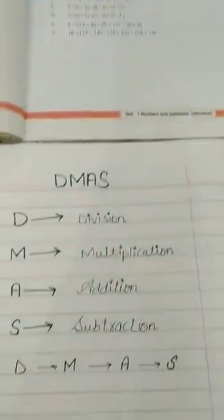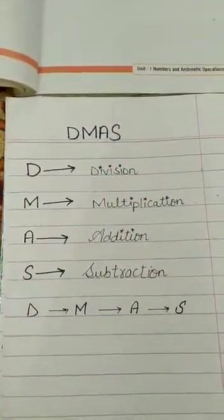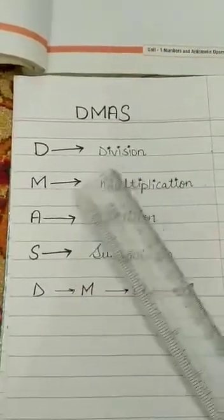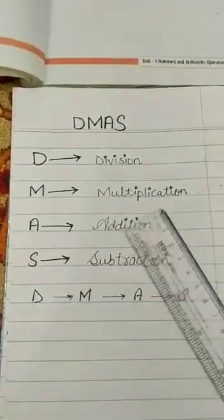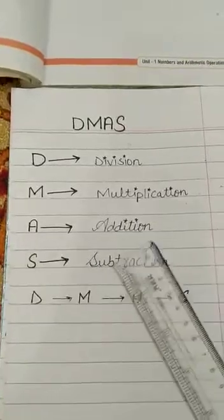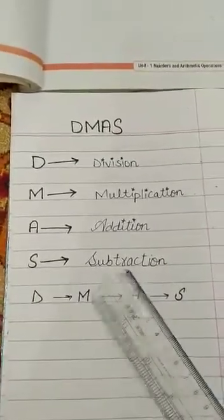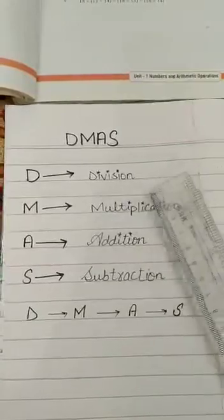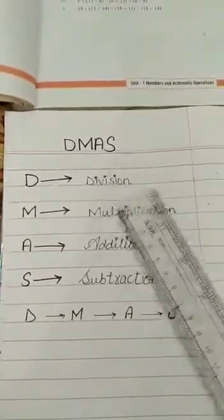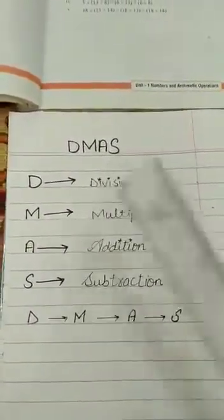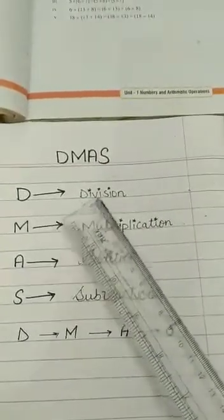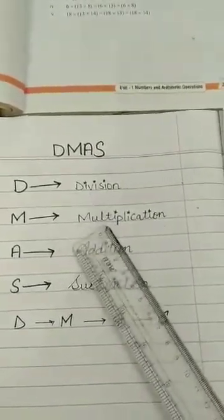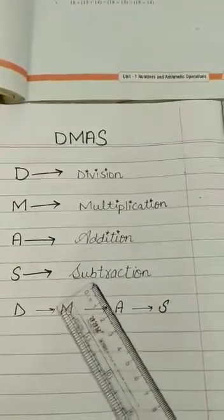Before I start this exercise, I will explain what DMAS is. In DMAS: D means Division, M means Multiplication, A means Addition, and S means Subtraction. When we have a question with division, multiplication, addition, and subtraction, we solve first division, second multiplication, third addition, and last subtraction.